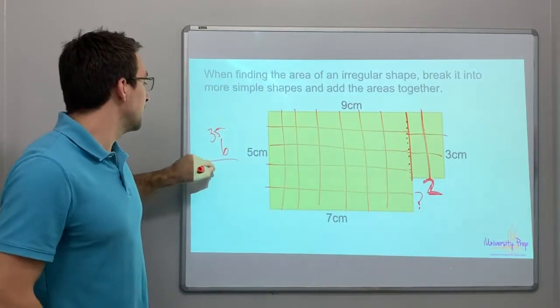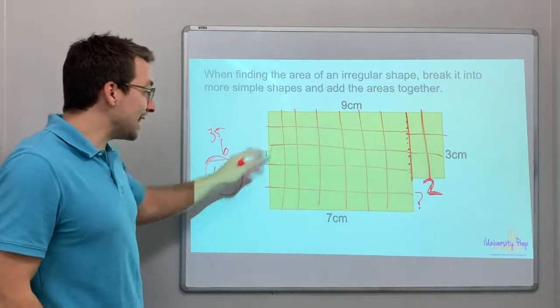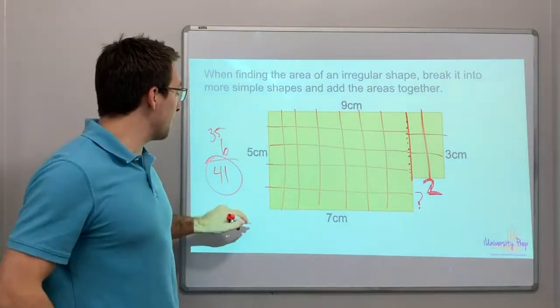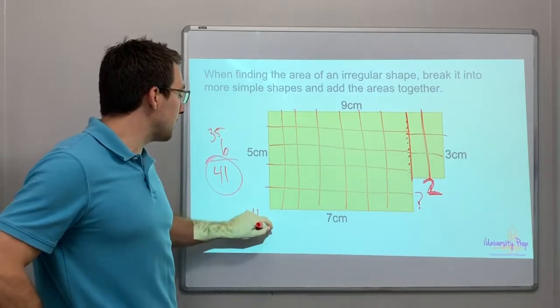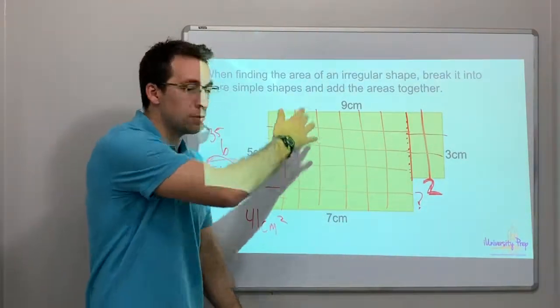35 plus 6 is 41. The area of this shape, of this irregular shape, is 41 centimeters squared. Because there's two dimensions. There's only length times width.